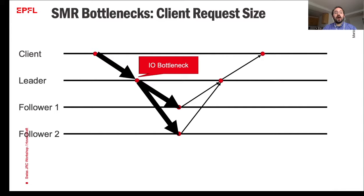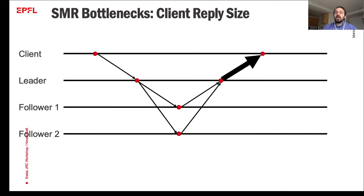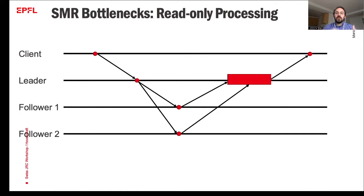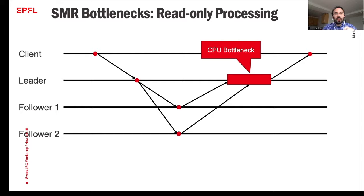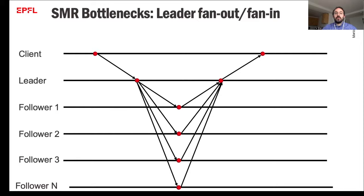Another bottleneck comes from large client replies: when the reply to an RPC is large, the leader — being the only one replying to the client — can again become an I/O bottleneck. The third bottleneck comes from the execution of operations that don't change the state machine state, such as read-only operations; the leader becomes a CPU bottleneck having to run these operations. The fourth bottleneck occurs when the number of followers increases: the leader must replicate to all followers and collect their replies, leading to high packet processing requirements that create a CPU bottleneck.